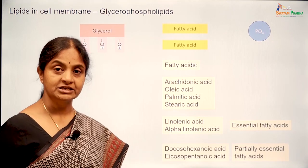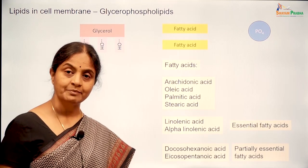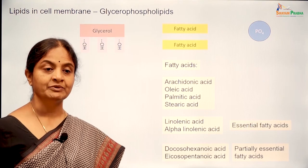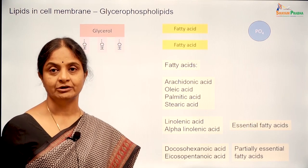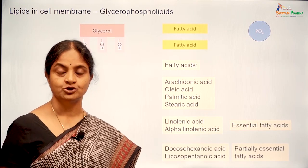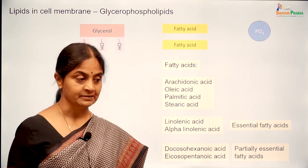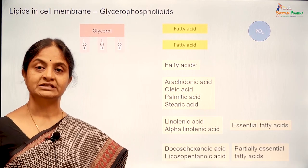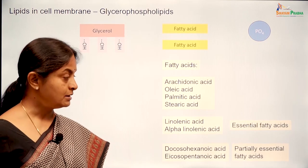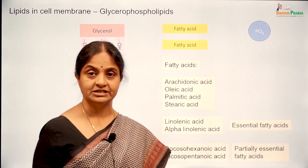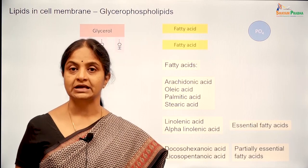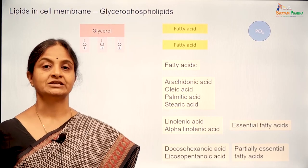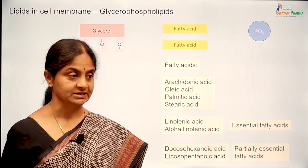Partially essential fatty acids can be synthesized by the body to a certain extent but we rely largely on our diet to obtain these. In fact, 90% of the phospholipids in the brain are partially essential fatty acids, and fish oils are a rich source of partially essential fatty acids.